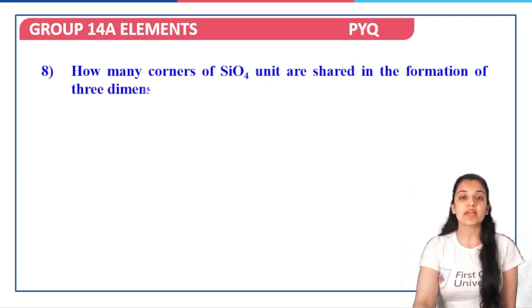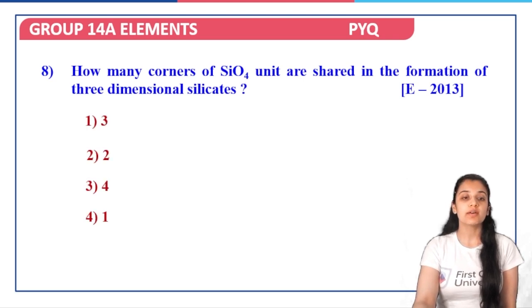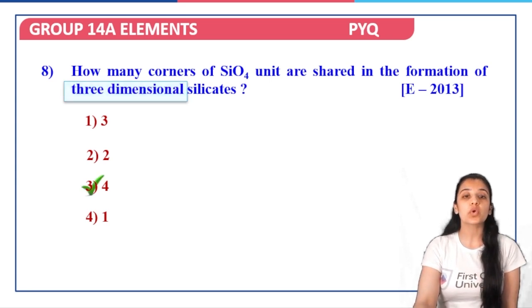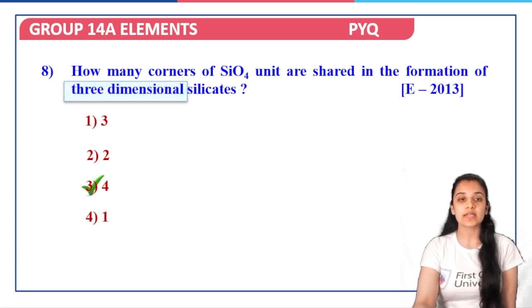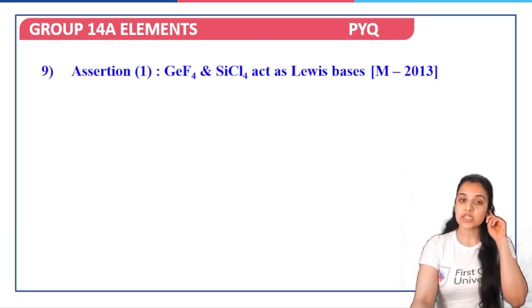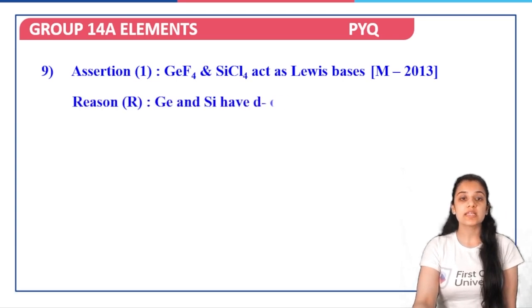Next question: how many corners of the SiO4 unit are shared in the formation of 3D silicates — 3, 2, 4, or 1? We have seen that in forming 3D silicates, all four corners are shared. So option three — four corners — is the correct answer.